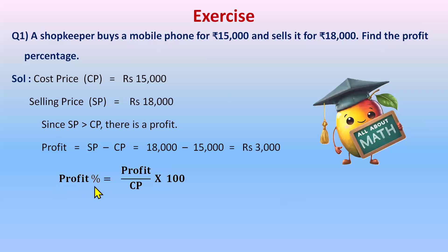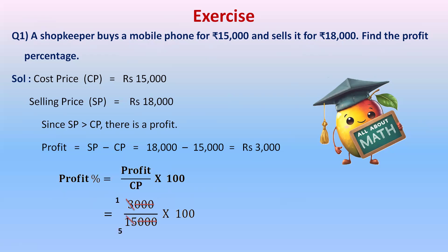The profit percentage formula is profit upon CP multiplied by 100. Profit is 3,000 and cost price is 15,000. So 3,000 upon 15,000 multiplied by 100. Cancelling the zeros and simplifying, the answer is 20%. The shopkeeper made 20% profit.